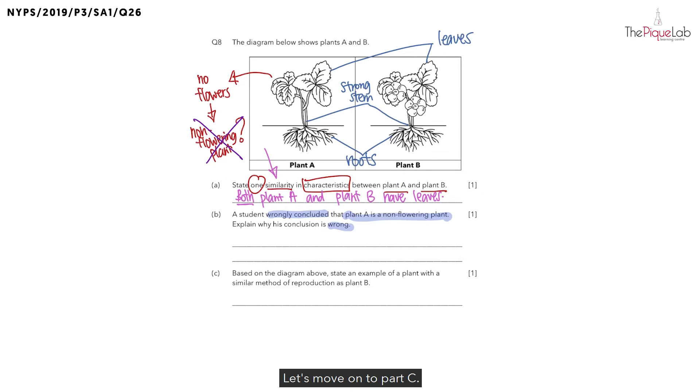Let's move on to part C. Based on the diagram above, state an example of a plant with a similar method of reproduction as plant B. Let's figure out how plant B reproduces first. If you look at plant B above, there are some special things growing on plant B. Can you tell me what those are? Those are flowers. There are flowers growing on plant B.